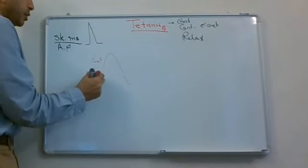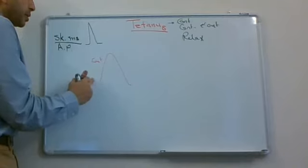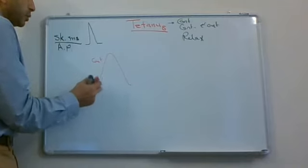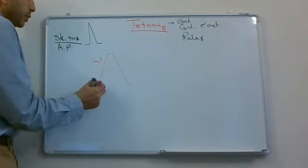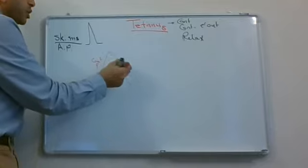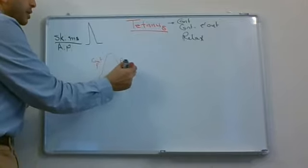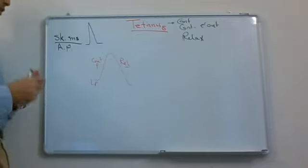The twitch has distinct phases: the latent period, the contraction phase, and the relaxation phase.